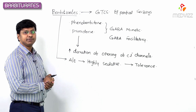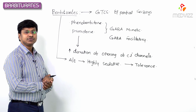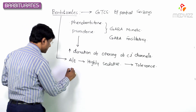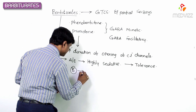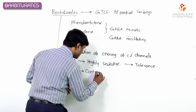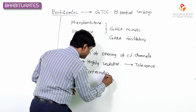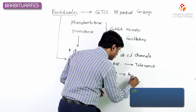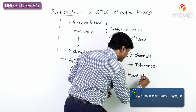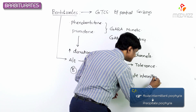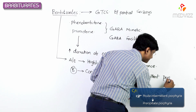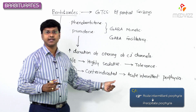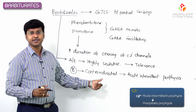An important contraindication of barbiturates: they are contraindicated in case of acute intermittent porphyria.